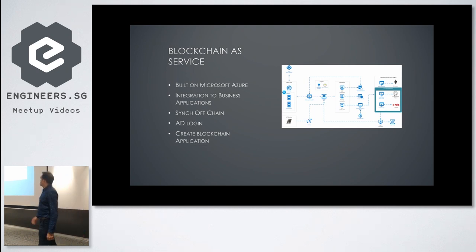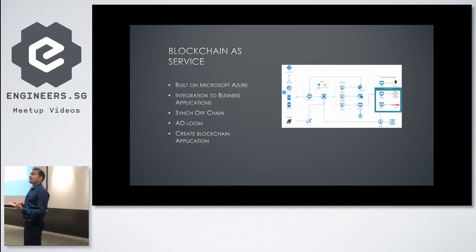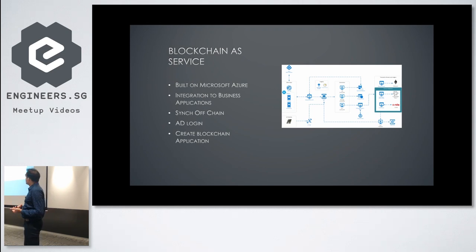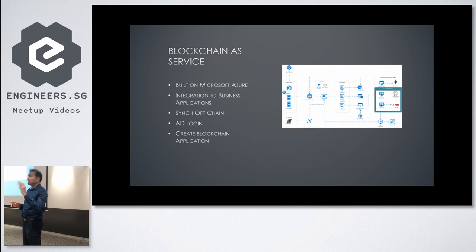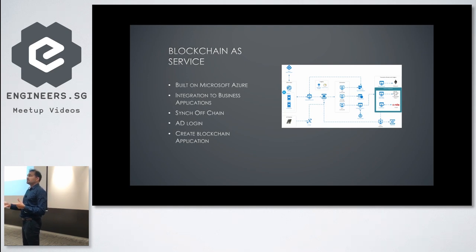Looking at the architecture, any transaction you post has a key vault and is encrypted within it, supported by default in Azure. Whatever transaction you post — for example in a retail business tracking orders — goes into multiple storages. First it goes to SQL for off-chain transactions, and if you want to push to blockchain, it goes on-chain. You have control over what transactions go to blockchain and what do not, since blockchain is a heavy transaction system and you don't want to track everything.